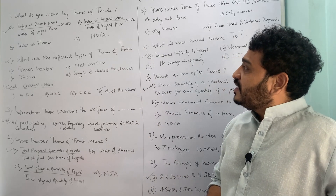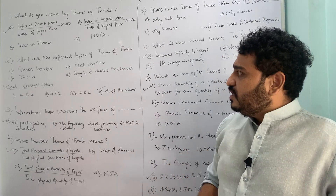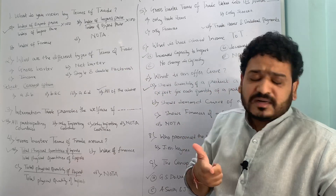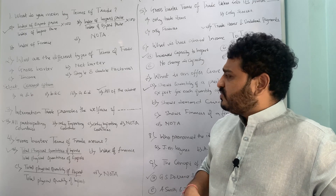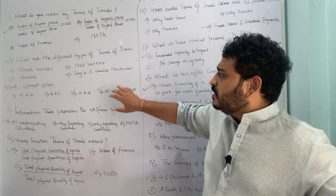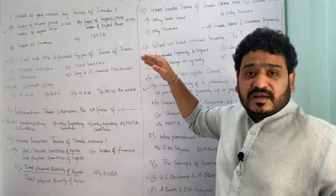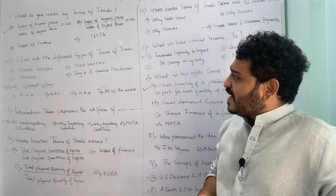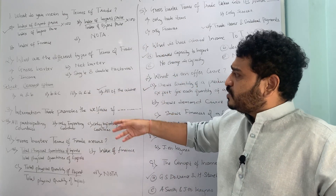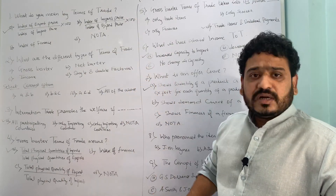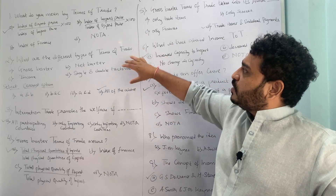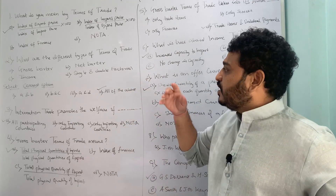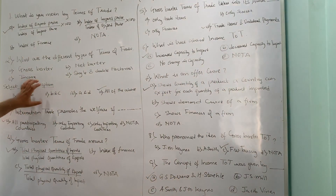The second MCQ is: what are the different types of terms of trade? The options listed are: (A) gross barter terms of trade, (B) net barter terms of trade, (C) income terms of trade, and (D) single and double factorial terms of trade. You must select the correct combination. Option 1 is A and B, option 2 is B and C, option 3 is A and D, and option 4 is all of the above. The correct answer is all of the above — gross barter, net barter, income terms of trade, and single and double factorial terms of trade.